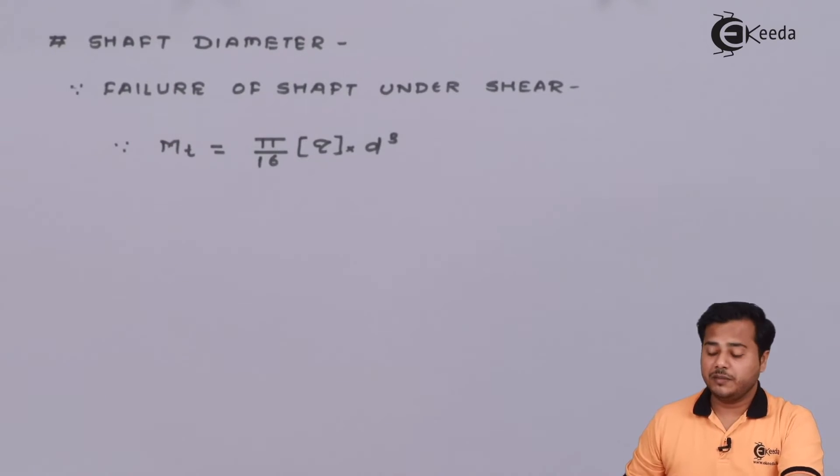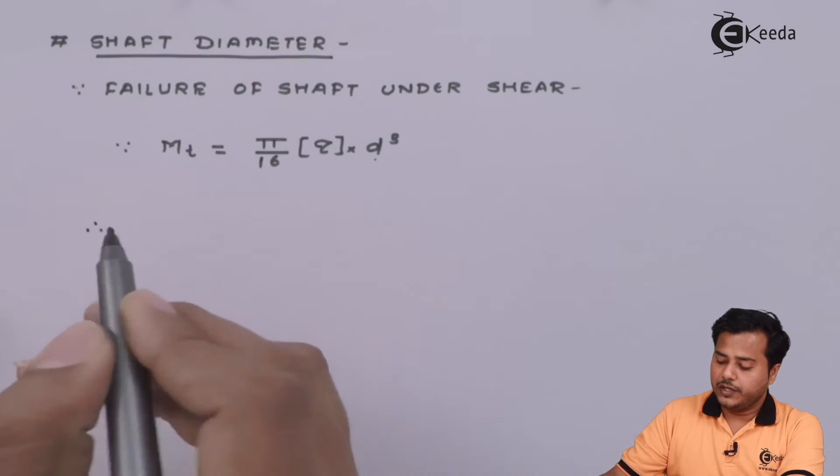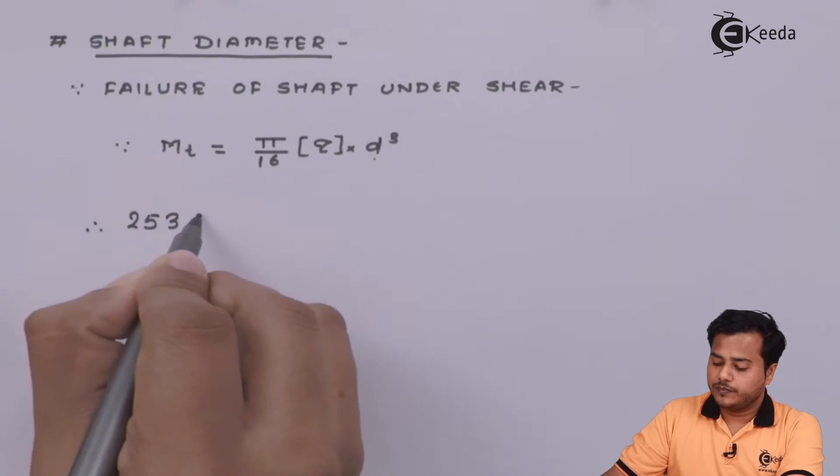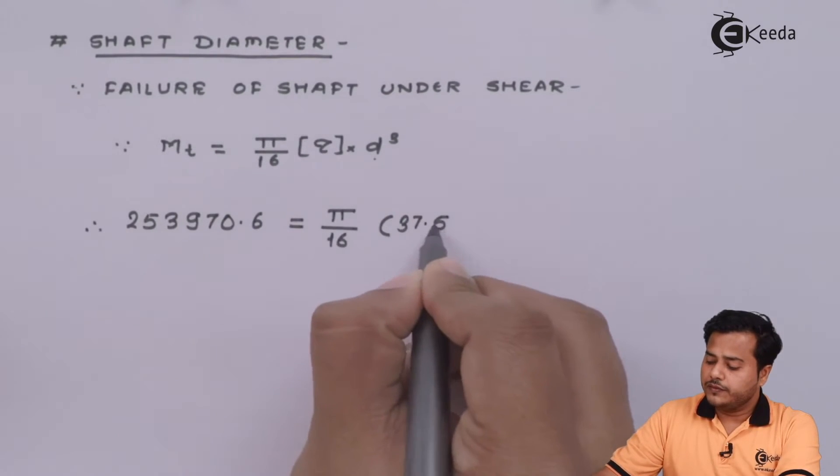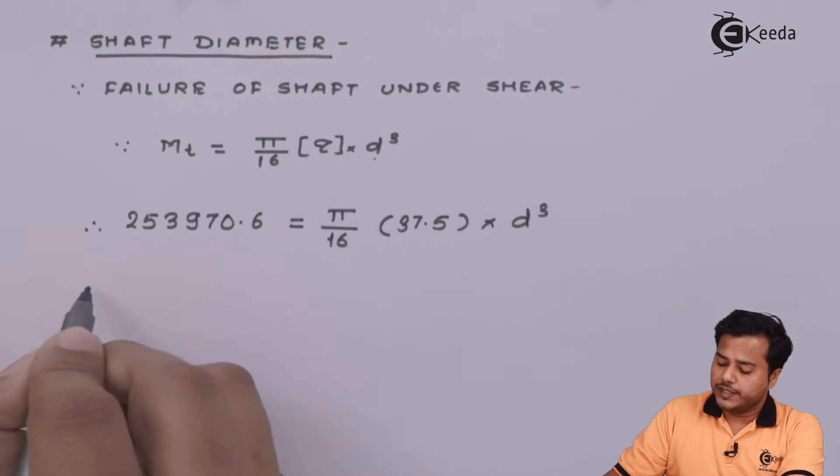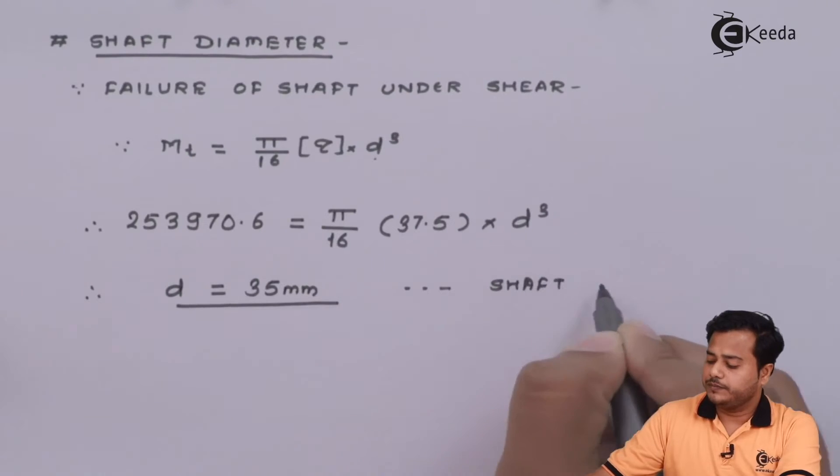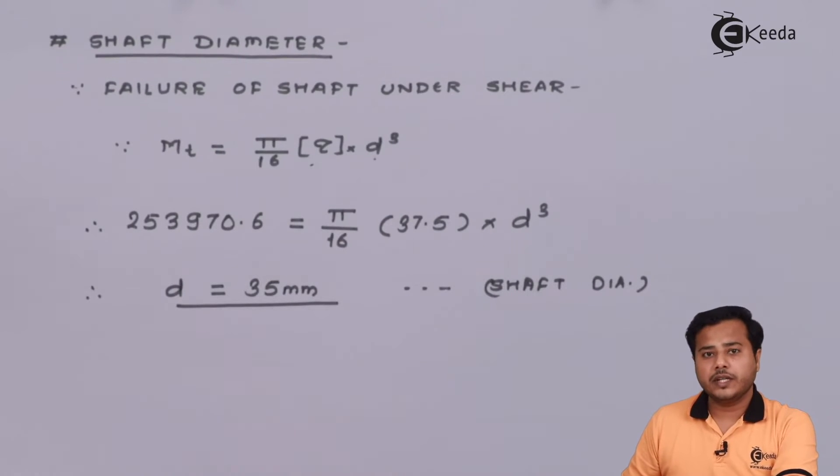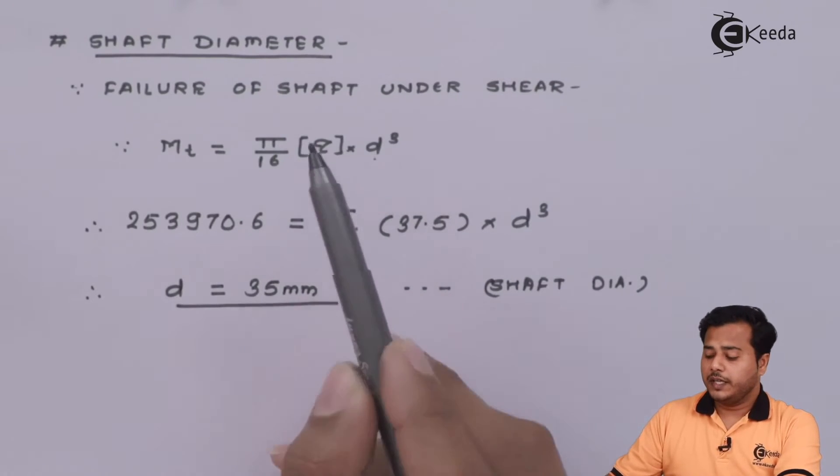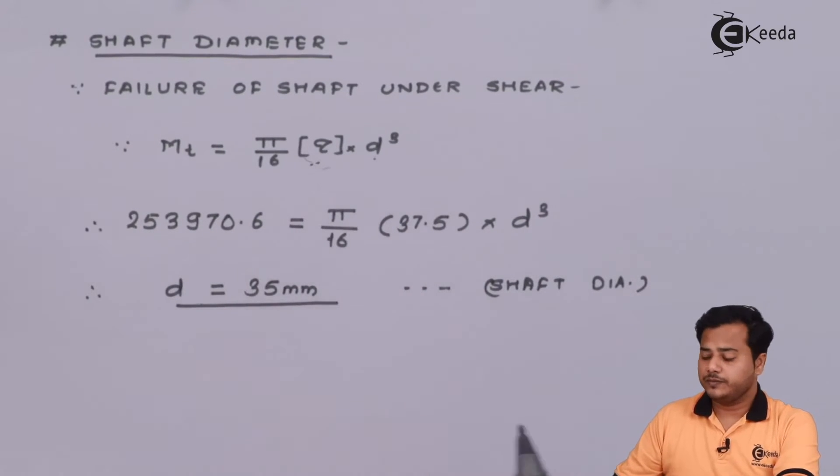The next very important thing is shaft diameter. We know that failure of shaft comes under shear, therefore we have to use the shear formula where d is diameter. We already have found out the value of torque to be transmitted. MT = π/16 times d³ times τ. The safe value of tau is 37.5. As we solve, we get the answer somewhere around 35 millimeter shaft diameter. Since we considered the given value as allowable, this is already a safe value. Both ways it is going to be same.